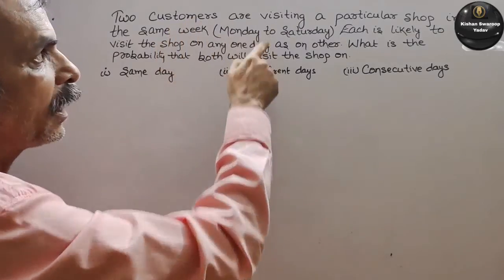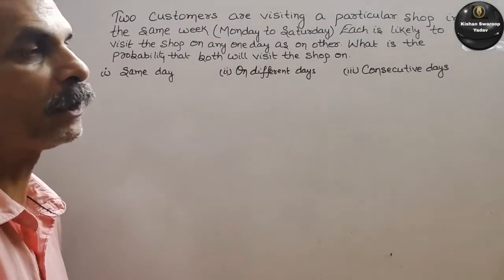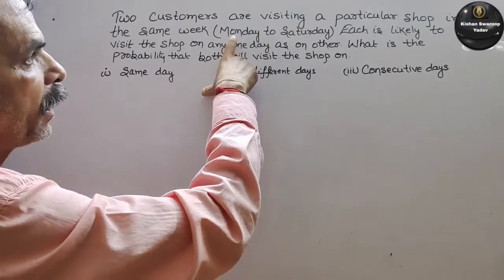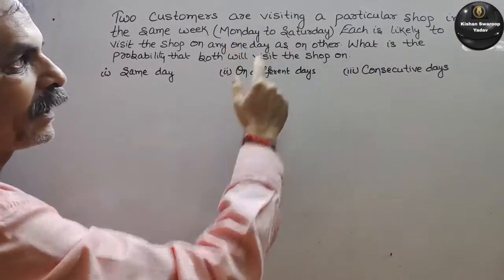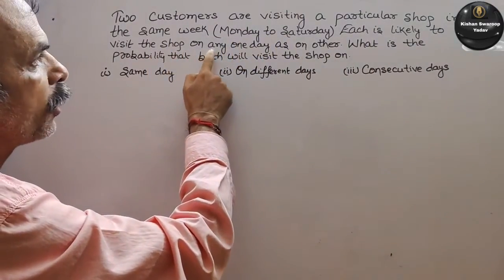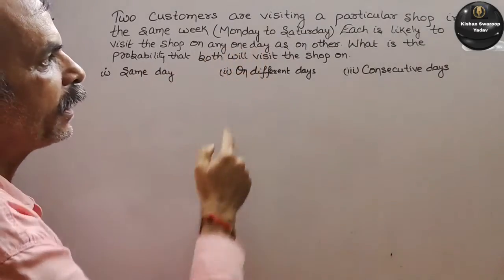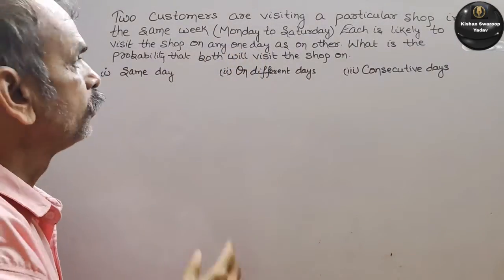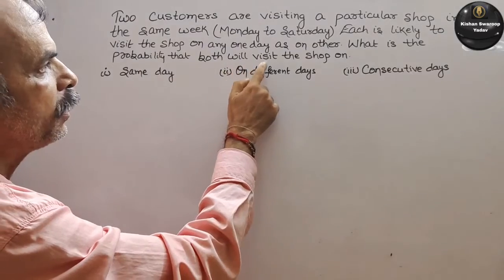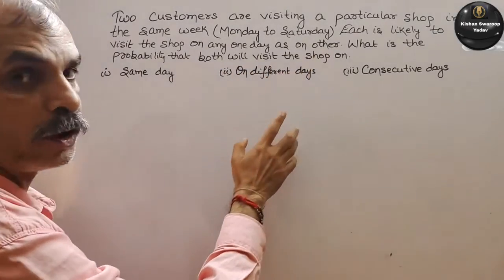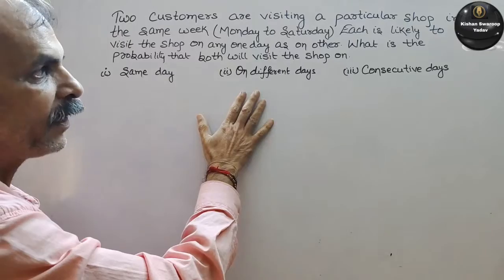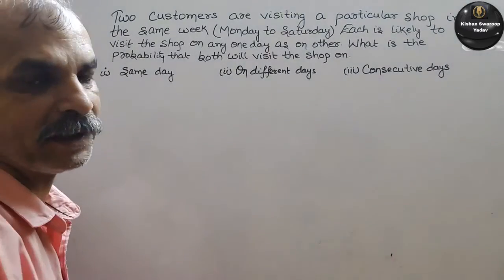Two customers are visiting a particular shop in the same week, Monday to Saturday. Each is likely to visit the shop on any one day as on any other. What is the probability that both will visit the shop on the same day, on different days, or on consecutive days?